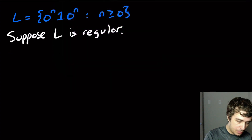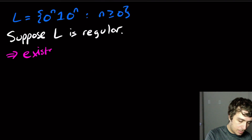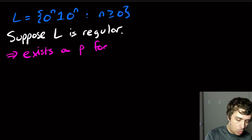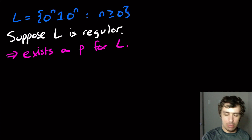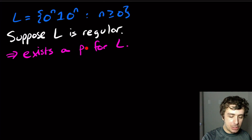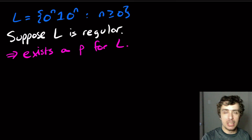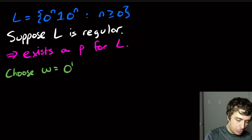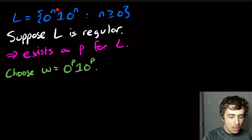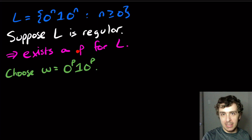So there exists a pumping constant — I'm going to shorthand it to P for this language. Now we need to pick a string that is of length at least P and in the language. The trick is to substitute P in for the exponent. So let's choose W equal to 0^P 1 0^P. Note that this is in L, and its length is 2P plus 1, which is definitely at least P.